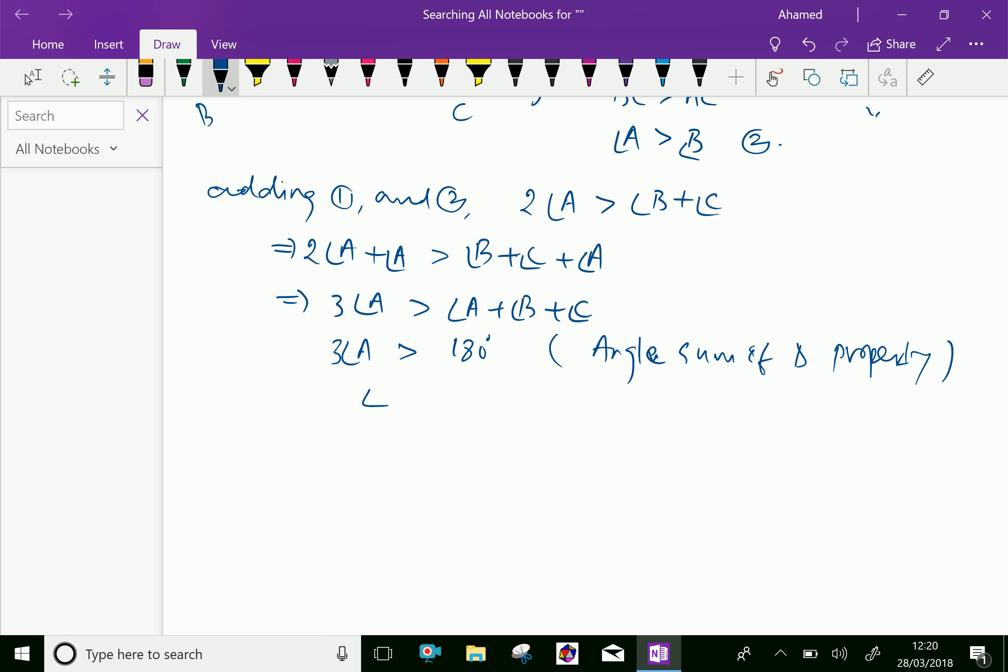Dividing by 3, angle A is greater than 60 degrees. This is equal to 2/3 of 90 degrees. So you can say angle A is greater than 2/3 of a right angle.